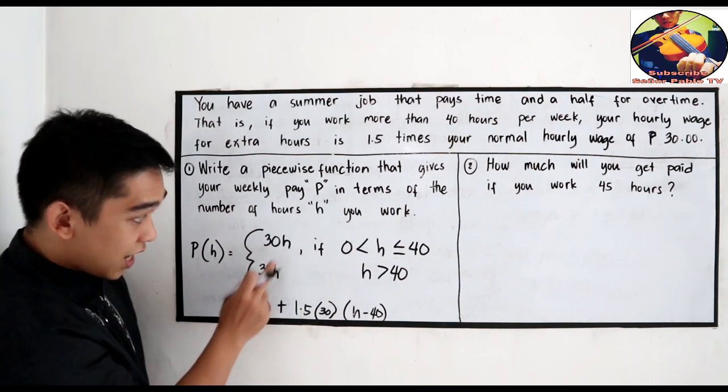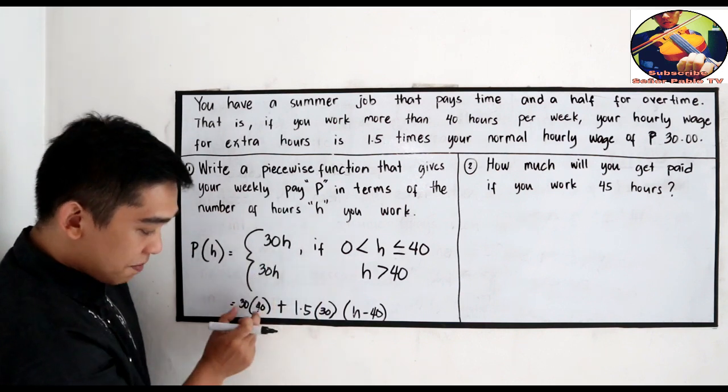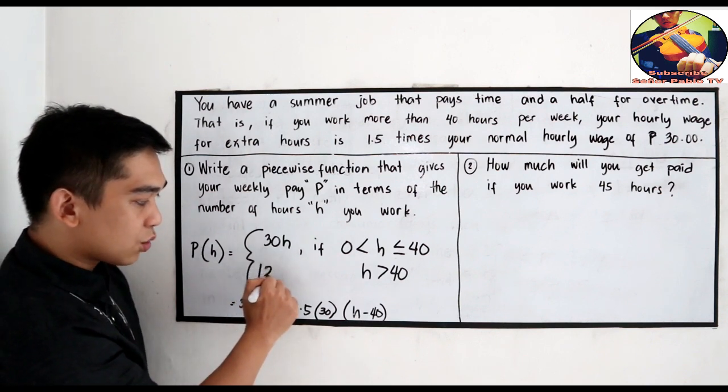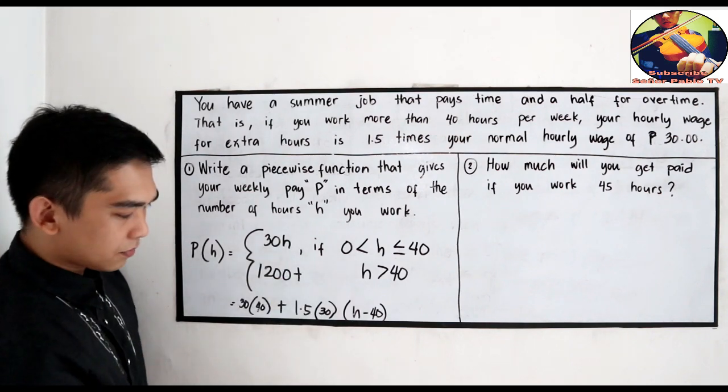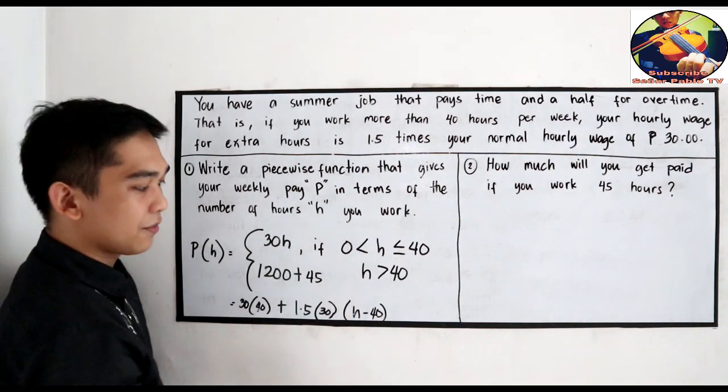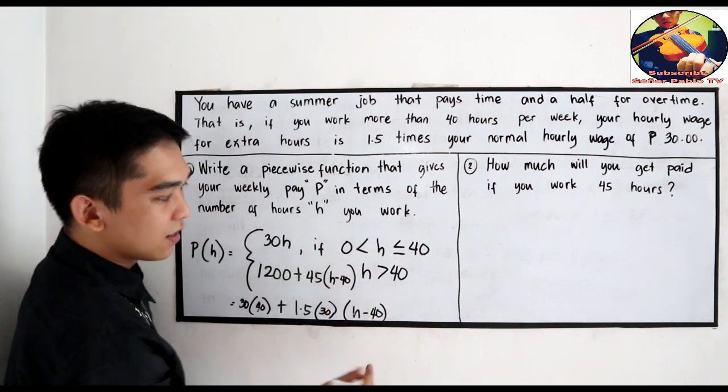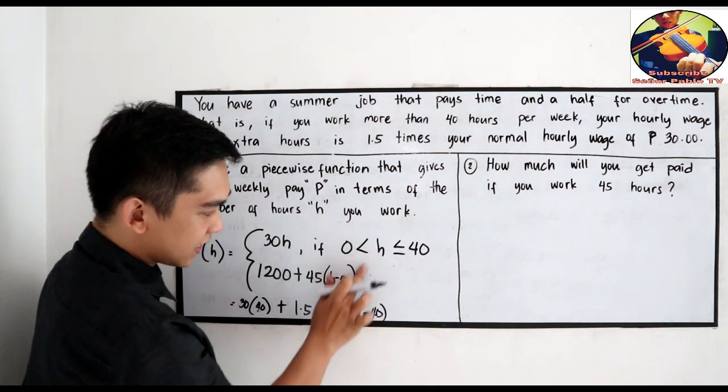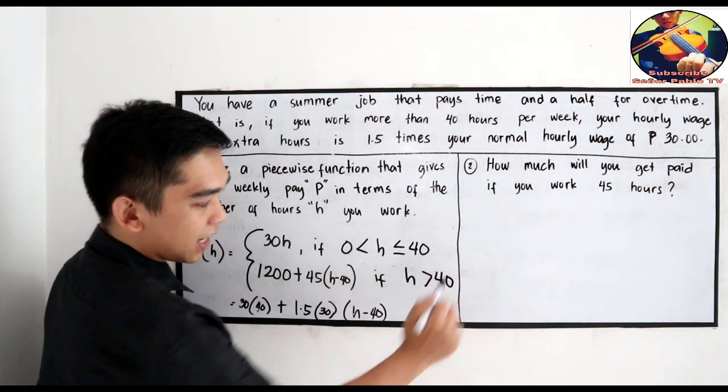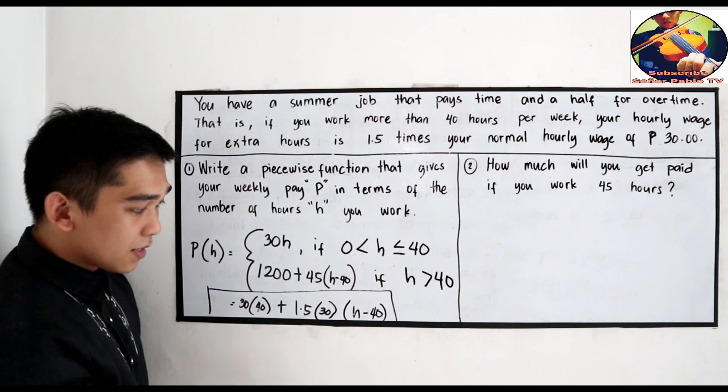So we multiply 1.5 times 30, that is 45. So now, 30h, our h is 40. Let's simplify: 30 times 40 is 1,200, plus 1.5 times 30 is 45, then the quantity h minus 40.